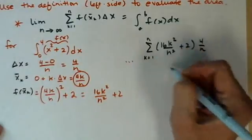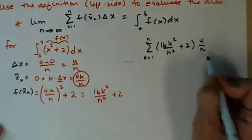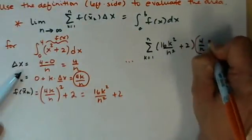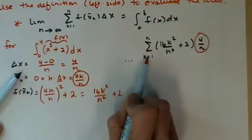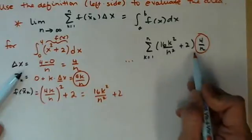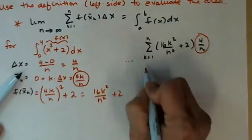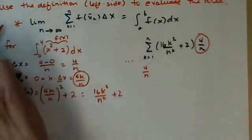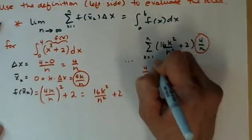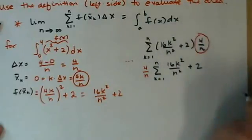So within this summation expression, k is the thing that's changing between 1 and n. This 4 over n on the outside here, this is not at all affected by what's happening to k. So since it's therefore a constant, a constant multiple, it's multiplying everything, I'm going to go ahead and move it out in front just to kind of tidy stuff up inside there. So 4 over n is going to move out front. I'm still adding from 1 to n, 16k squared over n squared plus 2.